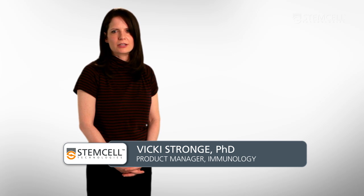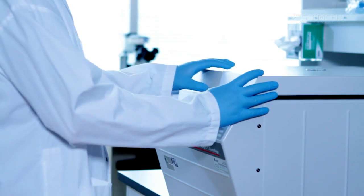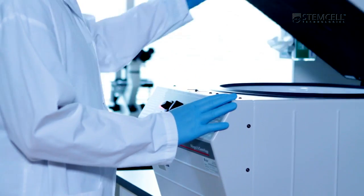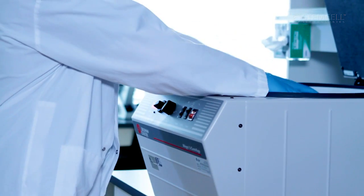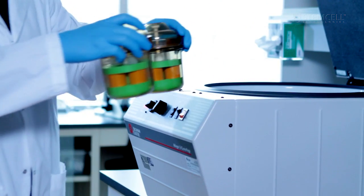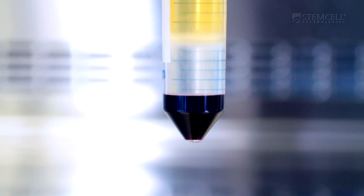it is often necessary to remove platelets from human blood samples prior to cell separation. This video demonstrates how to use a slow spin to reduce platelet contamination in fresh human blood samples after density gradient centrifugation.